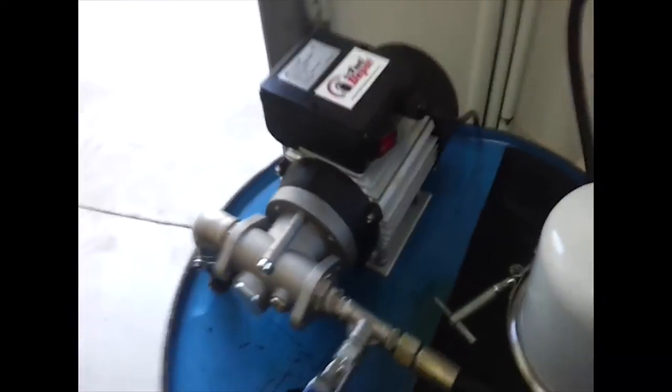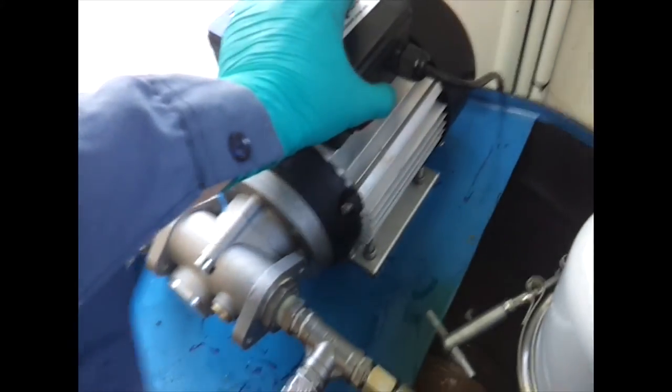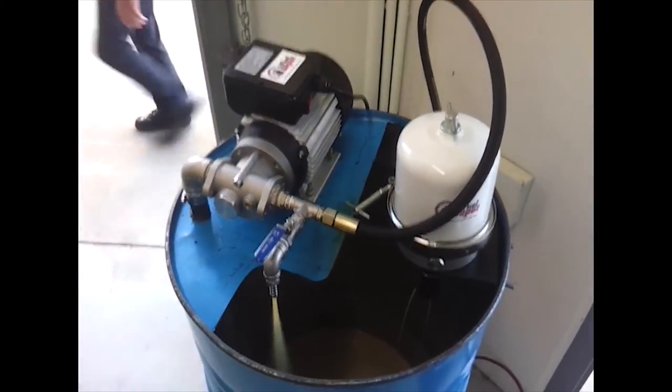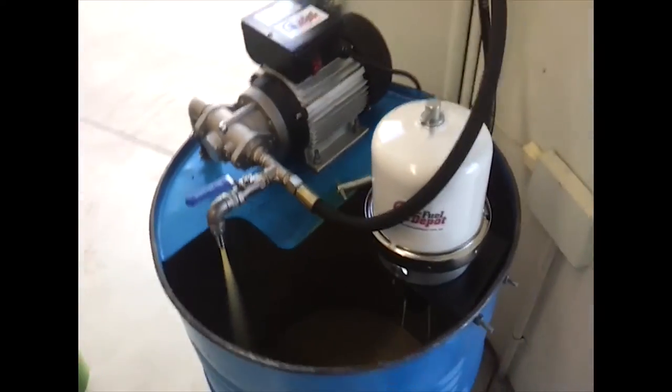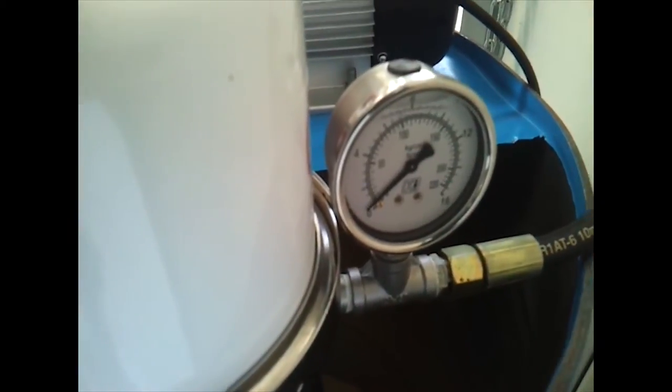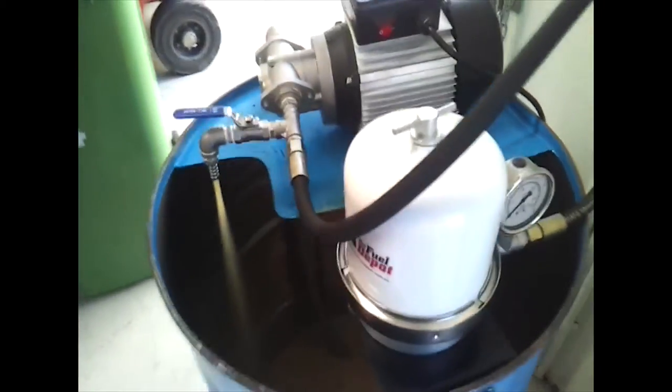The centrifuge will remove items that are denser than the carrier liquid and in this case we're filtering a mix of used motor oil and diesel from the workshop. Start by turning the pump on with the bypass valve completely open so no pressure is delivered to the centrifuge.